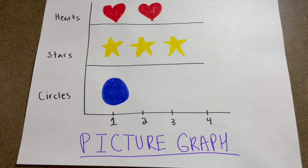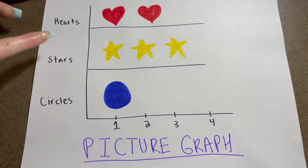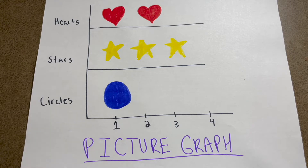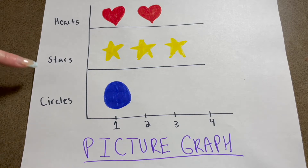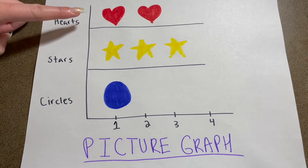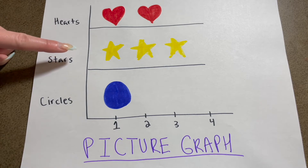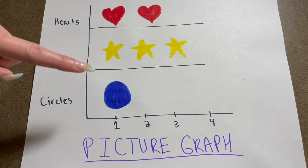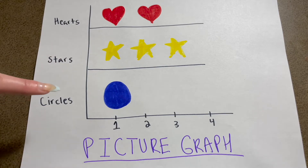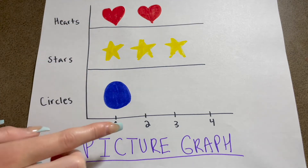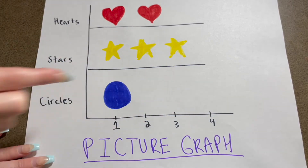Now let's talk about a picture graph. A picture graph has pictures in it to show how many there are. For a picture graph, the groups are on the side instead of on the bottom, and the number of how many we can have is on the bottom. The groups we have for this graph are hearts, stars, and circles. We know there are two hearts because there are two pictures of hearts in the graph, three stars because there are three pictures of stars, and one circle because we see one circle in the graph. We can also use the bottom to count: one, two, three — and none of them have four.